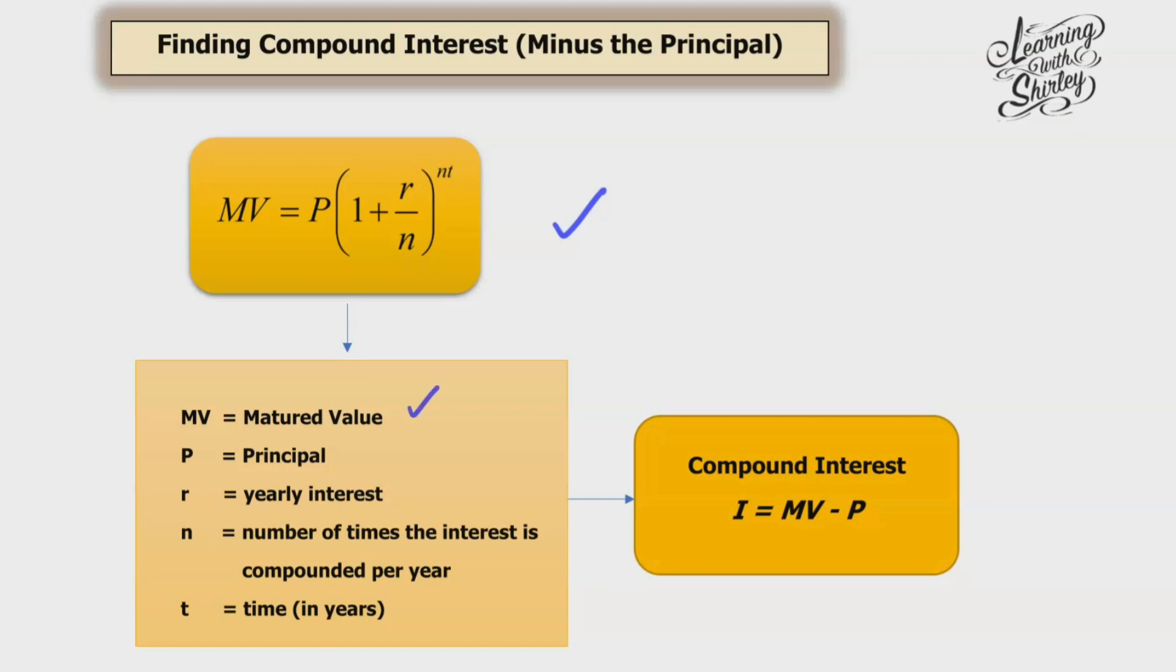MV stands for matured value. So matured value is the interest plus the principle. And then P stands for the principle. So principle is the money that you put in at first.